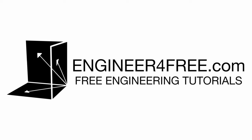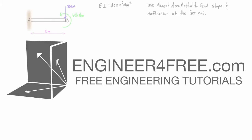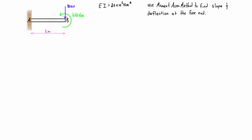Welcome back. In this video we want to use the moment area method to find slope and deflection at the free end of a cantilever beam that has a point load and an applied moment acting at the end. The first thing we need to do is generate a bending moment diagram.